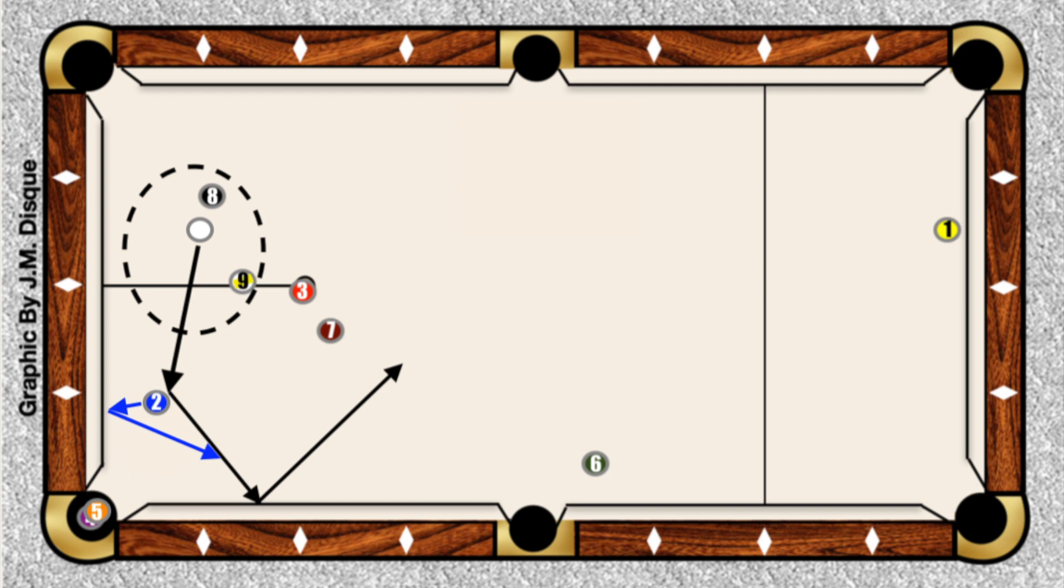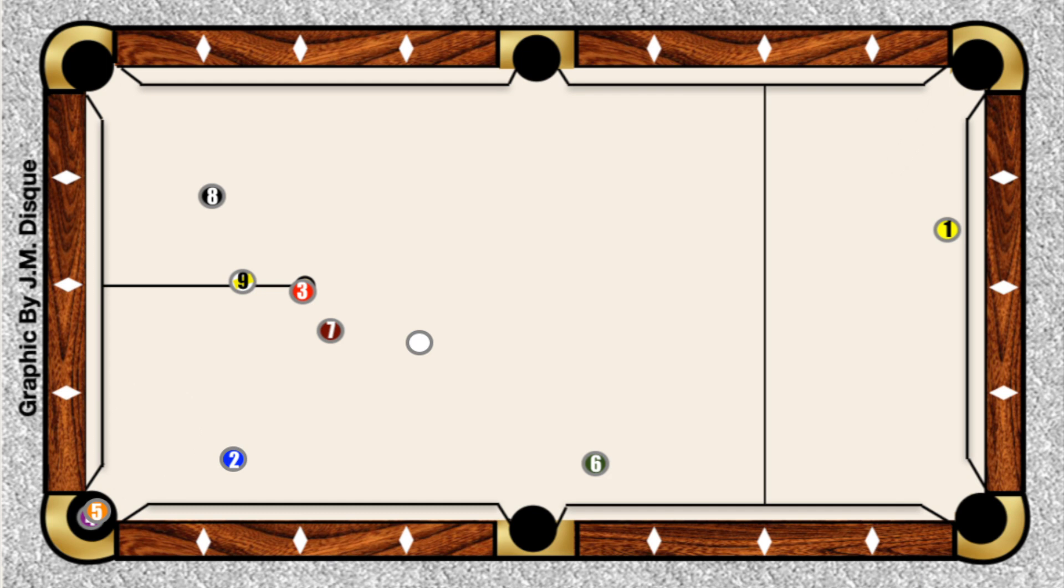So if we look at the end result of shooting this billiard, you have an easy shot on the 2-ball. That allows you to get on the 3, and that just opens up the whole game for you and gives you a relatively easy run-out.